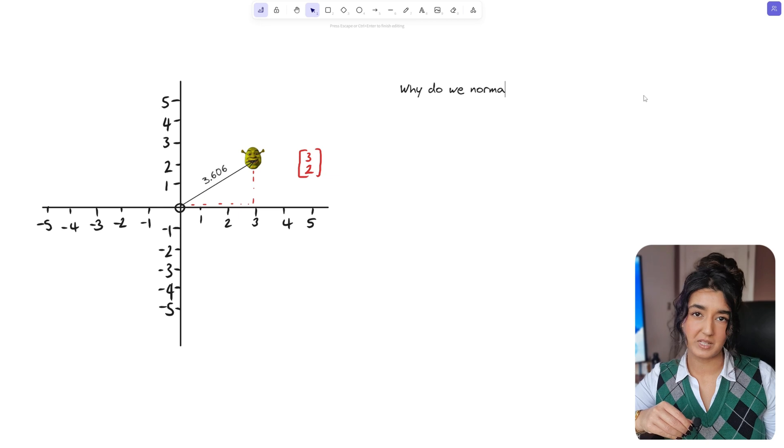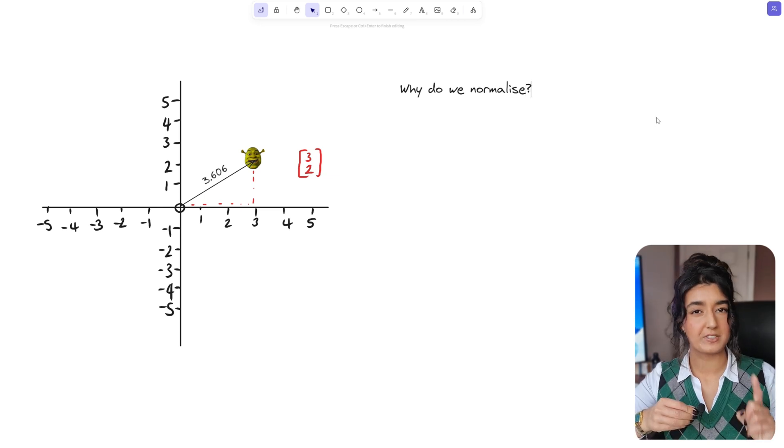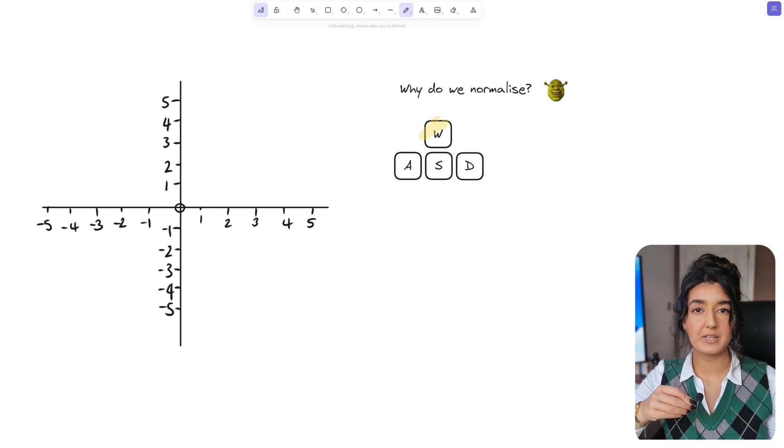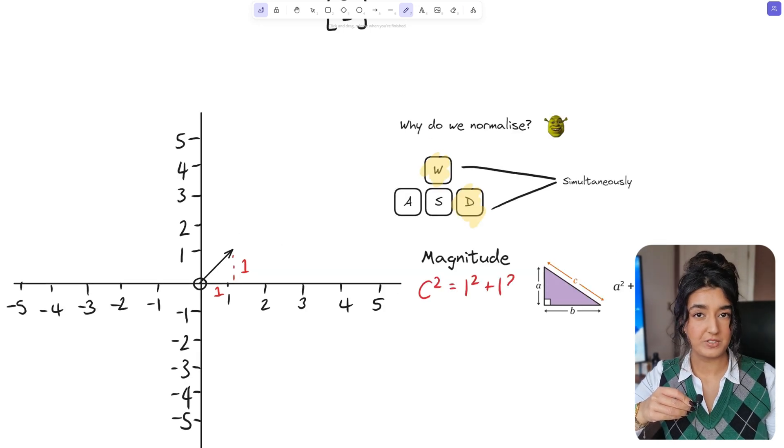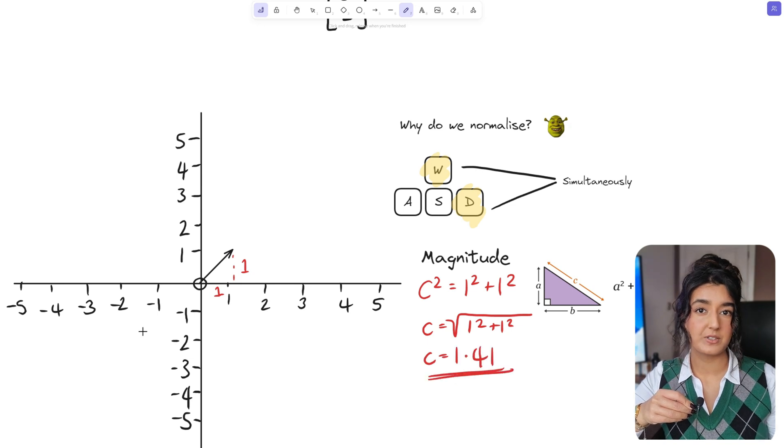So what is the purpose of normalization then? Let me give you a scenario. Imagine the player pressed the up key and the right key simultaneously on the keyboard, our input vector would be 1, 1. If we calculate the magnitude of this input vector like we did before we get a magnitude of 1.41.